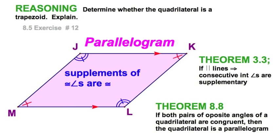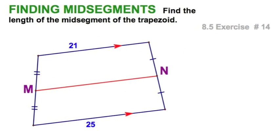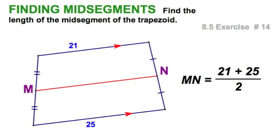That's not what the teacher's edition says. Don't you like it when the book is wrong? Now let's find the length of this mid-segment — pretty straightforward. I just averaged the bases and I know it's 23. But think about what average means: what's in the middle of these two numbers? Two up from 21, two down from 25. That may come in handy when we're solving for the bases instead.